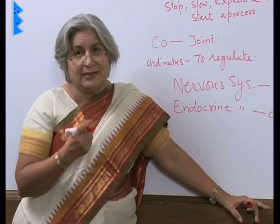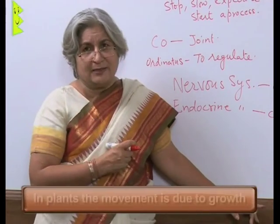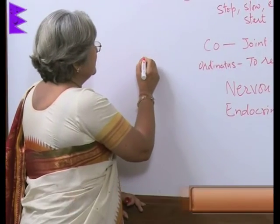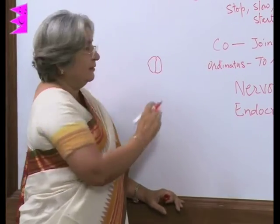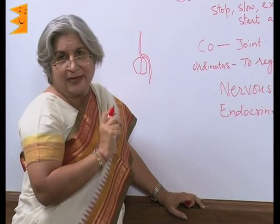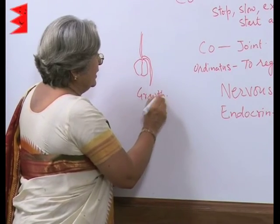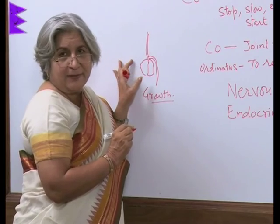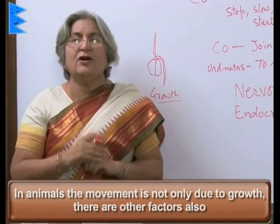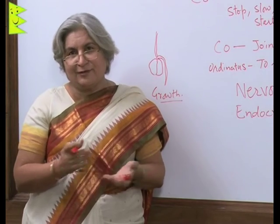We largely associate life with movement — anything that is moving we say is alive. In life processes, there is movement of many molecules. In the case of plants, movement can also be because of growth. Take the example of a seed put in the soil — the root comes down, the plumule goes up, pushes the soil and comes out. This movement is because of growth. But in the case of animals, movement is not only because of growth — there can be many other things. A cat running after a mouse — that is also movement, and it is for food.